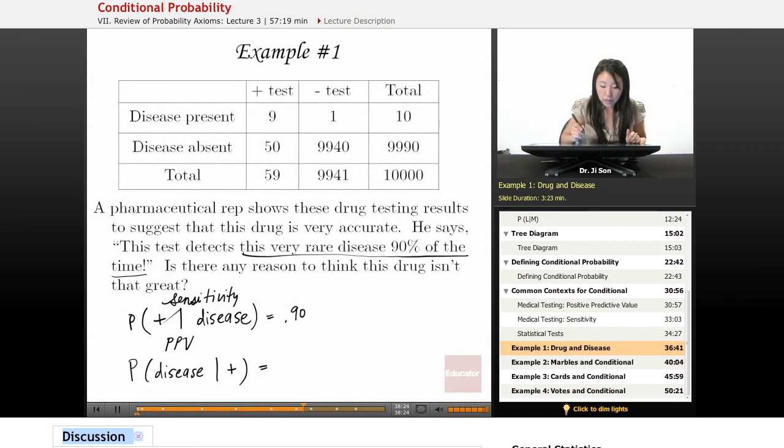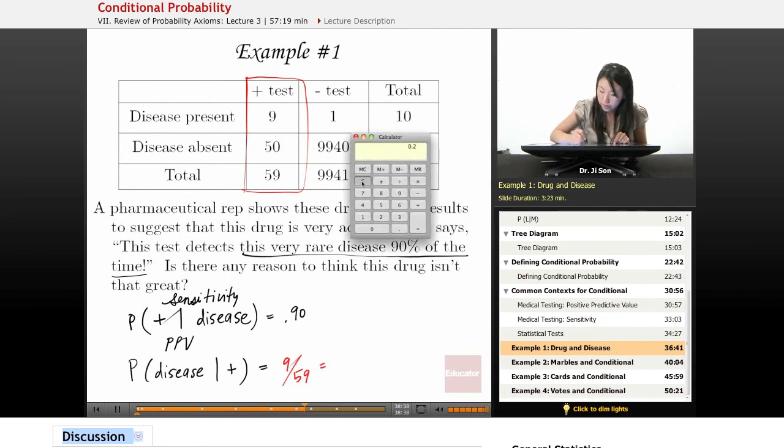And so in this case, we're looking at this world. The test is positive, right? Given this world, that would be 9 out of 59. So 9 out of 59, and that's 15%.